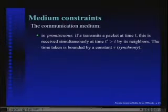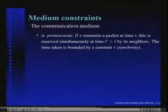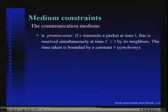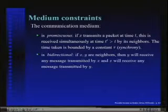Namely, you want the medium to be promiscuous. If a node broadcasts something at some point in time, then all its neighbors will receive that at the same time. And essentially, the time taken is bounded, so I want synchrony. I don't want this time to get larger and larger. So I want the medium to be promiscuous, I want the medium to have synchrony, I want bidirectionality.